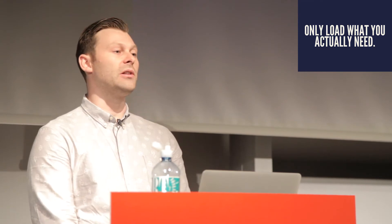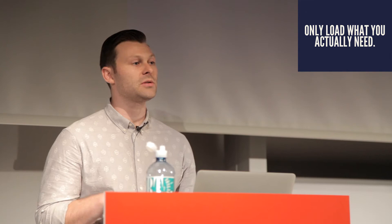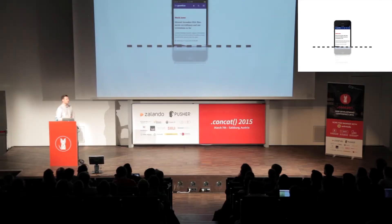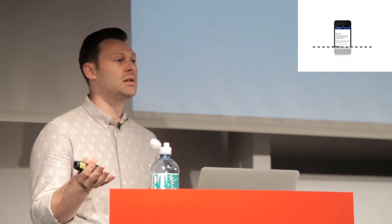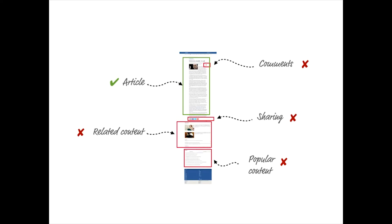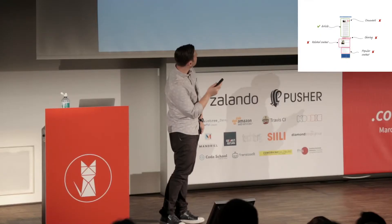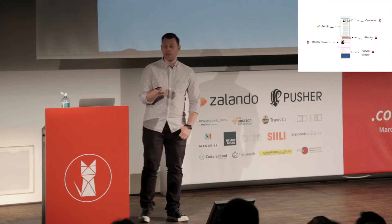For a while we've been saying we should only load what we actually need — don't send too much down, keep it light, keep it fast. Our friends from the Guardian, Patrick Hayman and his team, took that further. They took the idea of the fold on mobile and desktop, looked at their content, and broke it into chunks: article, comments, sharing, related content, and popular content. For a news site it's pretty easy to see that comments, sharing, and related content, while important, aren't the main feature of the page.